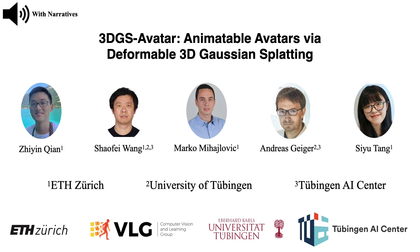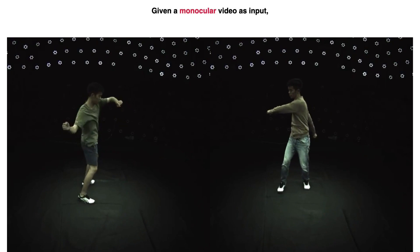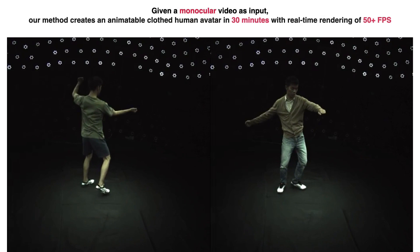We present 3DGS Avatar, animatable avatars via deformable 3D Gaussian splatting. Our approach utilizes 3D Gaussian splatting to create animatable clothed human avatars from monocular videos.